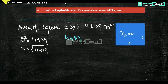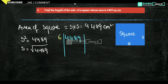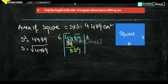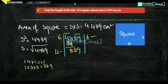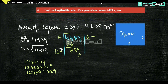For √4489, we group the digits as 44 and 89. Below 44, the nearest perfect square is 36 (6²), so 6 goes in the quotient. Now the remainder gives us 8, we bring down 89. We try 121 × 1 = 121, then 123 × 3 = 369, then 127 × 7 = 889. So we take 7, giving us 889, and the remainder is 0.